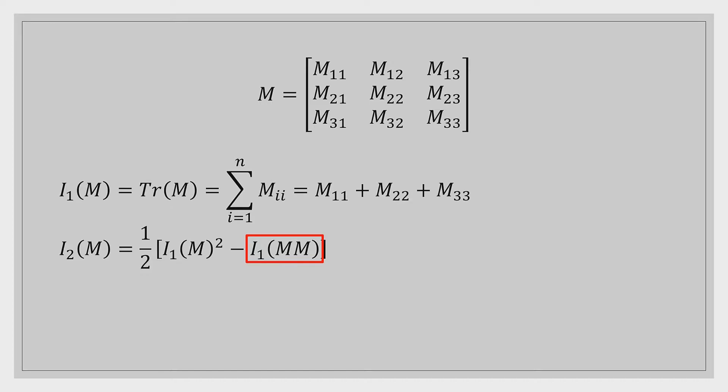And then the final invariant, I3 of M, is just the determinant of M. So we talked a lot about the determinant back in the previous video. So by this point, you should know how to take the determinant of a 2 by 2 matrix, of a 3 by 3 matrix, and even a 4 by 4 matrix. So that one should be nice and easy. So to help explain these just a little bit further, we're going to jump into the quiz. The quiz is nice. It's only one question. And it asks us to find the three determinants of a matrix. So let's jump into the quiz.